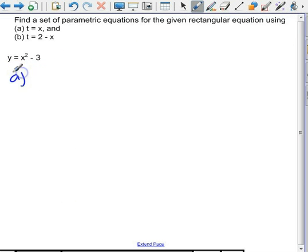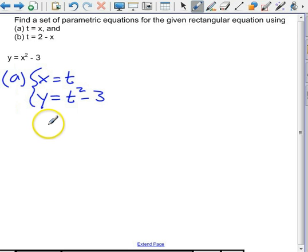a. Well, if t equals x, then that means that x equals t and y equals t squared minus 3. So that's our set of parametric equations.